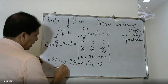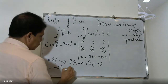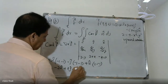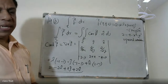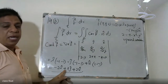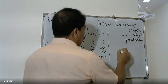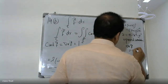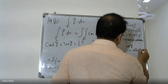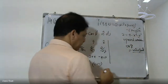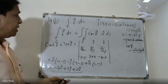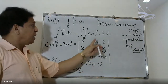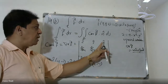So we can enter the answer. The del cross F value is: minus 2y i plus 2j plus 2k. This is the del cross F value: minus 2y i plus 2j plus 2k.